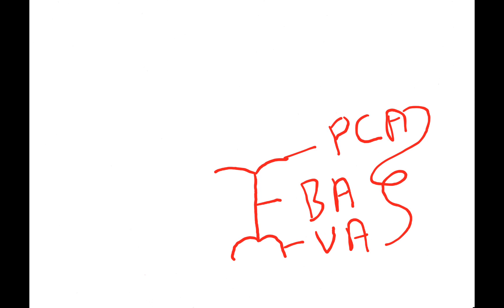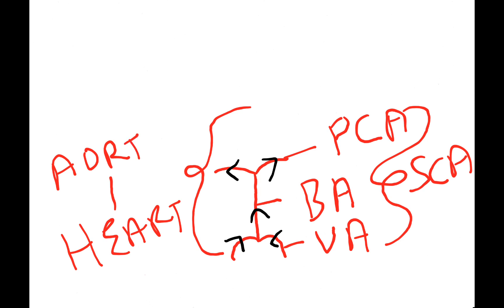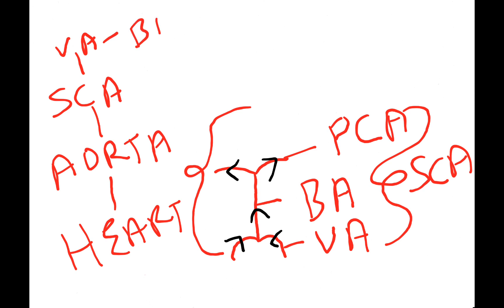All of this is derived from the subclavian artery. The direction of blood flow is like this. Let's trace it from the heart — from here comes the aorta, from here comes the subclavian artery, from here comes the vertebral artery, from here comes the basilar artery.